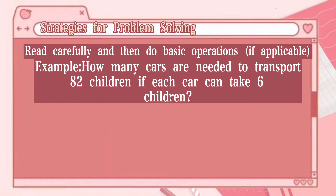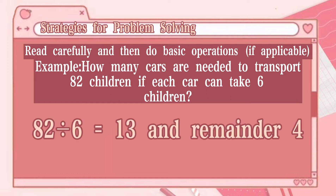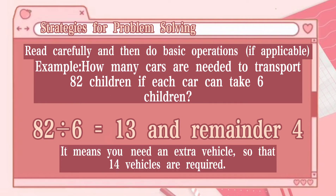Only simple division is required: dividing 82 by 6 gives 13 with a remainder of 4. You need to think about what remainder 4 means in this problem. In this case, it means you need an extra vehicle, so 14 vehicles are required. You can't leave the 4 kids behind.